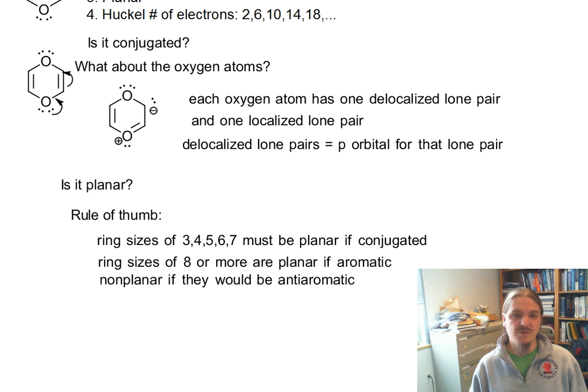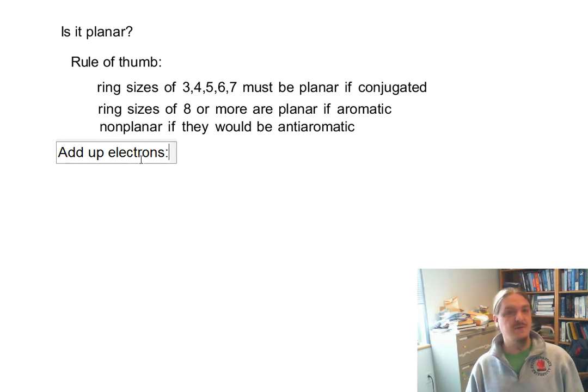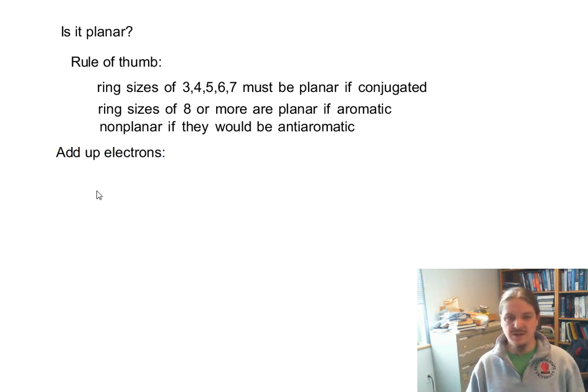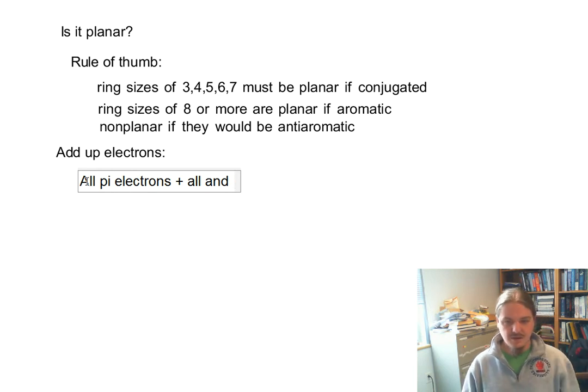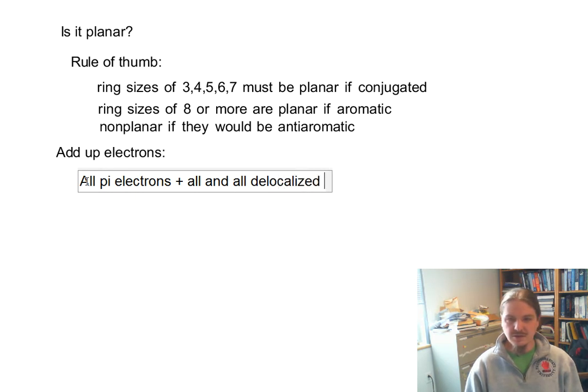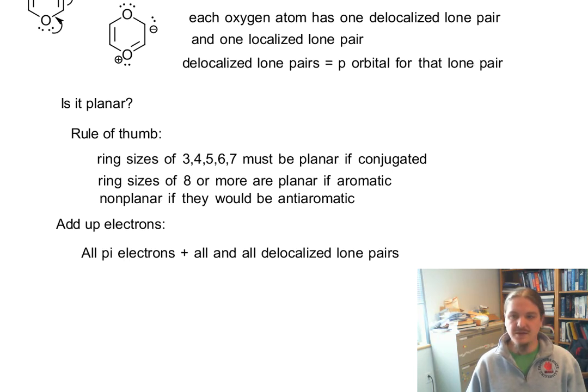Now we just need to get to rule number four, Hückel number of electrons. So add up the number of electrons or we could be adding up the electron pairs. So we were looking for an odd number of electron pairs or a 4n+2 number of electrons. So looking for all pi electrons plus that are in drawn pi bonds and then all delocalized lone pairs.